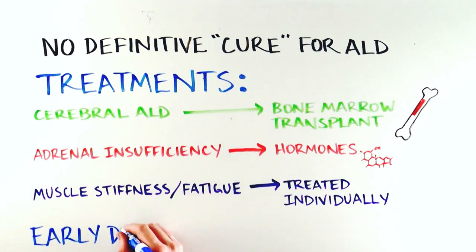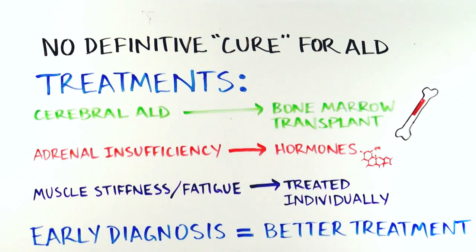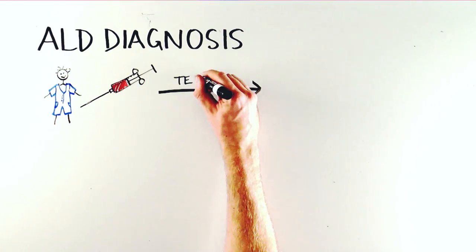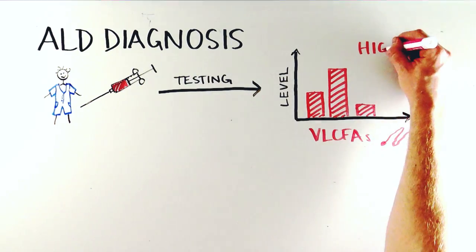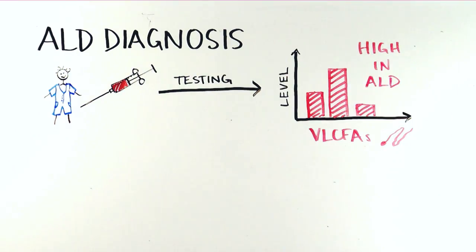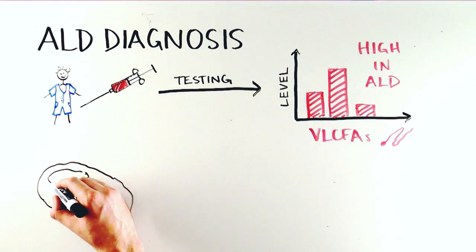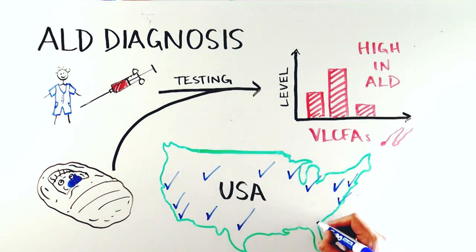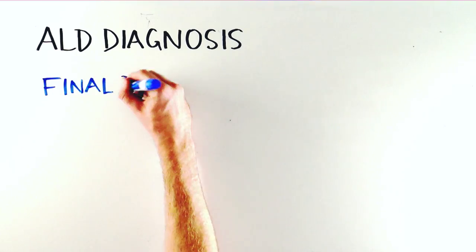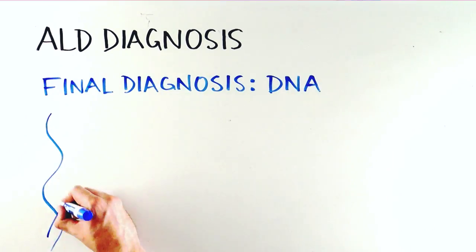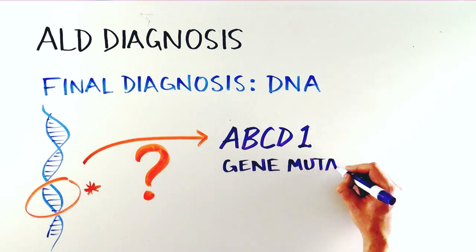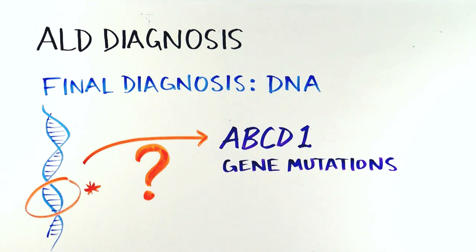In ALD, earlier diagnosis allows for better treatment. To diagnose ALD, we begin by measuring blood levels of very long-chain fatty acids, which accumulate in ALD patients. This test can easily be performed at birth and is being added to the newborn screening panel in a growing number of states. The final diagnosis of ALD is made by identifying mutations in the ABCD1 gene, which can be done after birth or as part of a prenatal diagnosis.